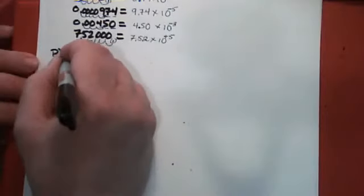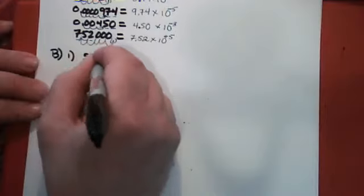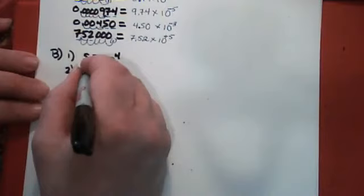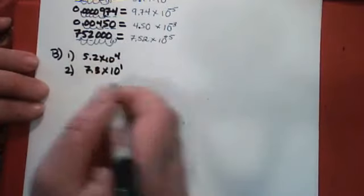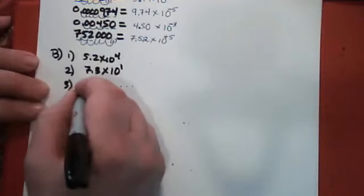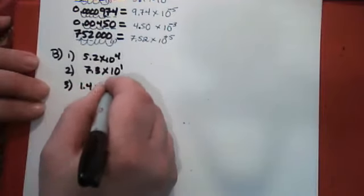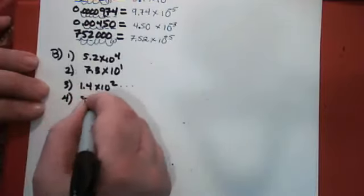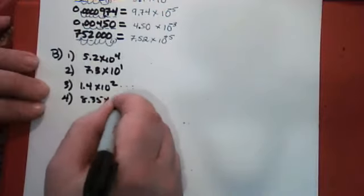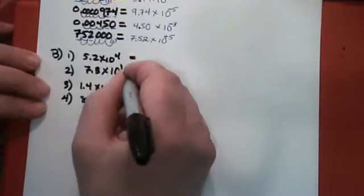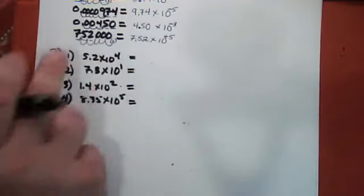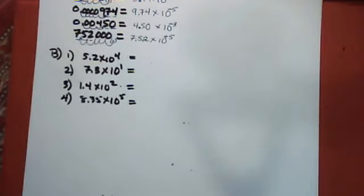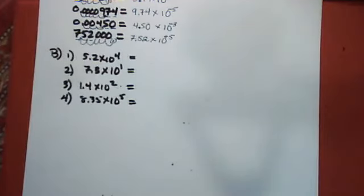There are some examples here. The first one is 5.2×10⁴. The second is 7.3×10¹. The third one is 1.4×10². And the fourth is 8.35×10⁵. We want to put all of those in decimal form. Why don't you pause the video and give them a try, and then start it up again and we'll see what I got.